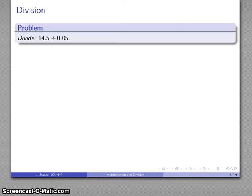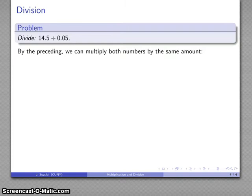So for example, let's say I want to divide 14.5 divided by 0.05. Well, by the preceding argument, I can multiply both numbers by the same amount without changing the actual quotient. So maybe I'll multiply both of these by 10. Well, multiplication by 10 is easy. That gives me 145 divided by 0.5.